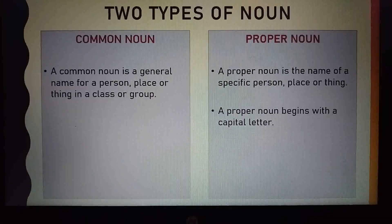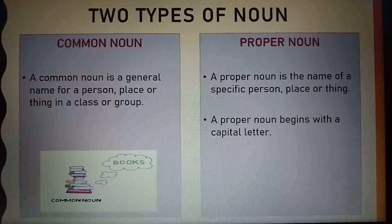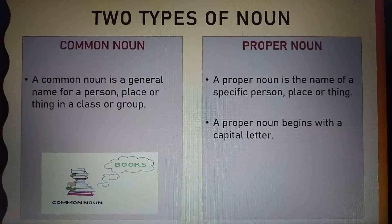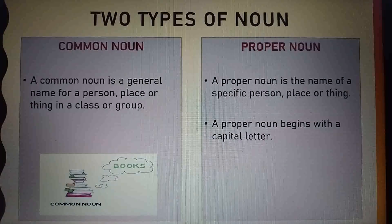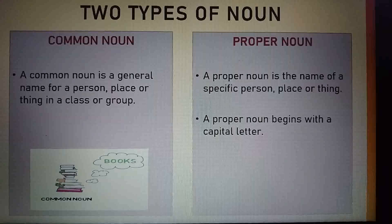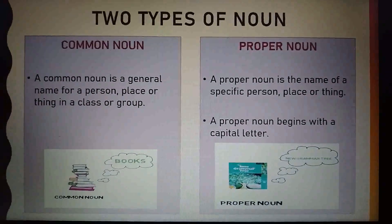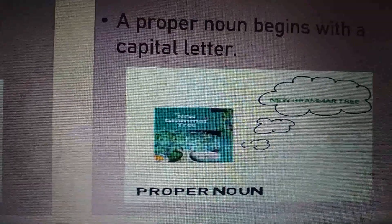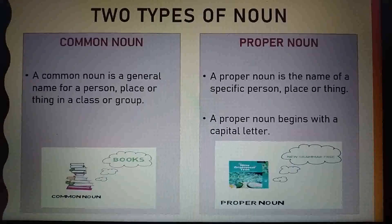Now, let us see an example of common noun. You can see in this picture there is a collection of books. So, books come in the category of common noun. Now, let us see an example of proper noun. Here, you see a picture of a particular book named New Grammar Tree. So, it comes under the category of proper noun.